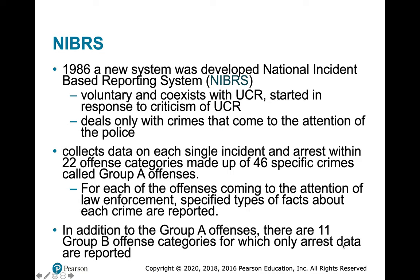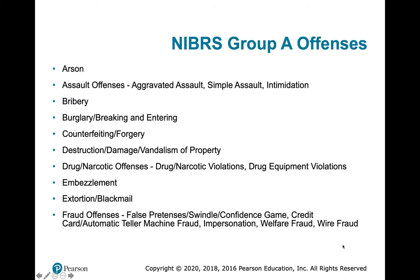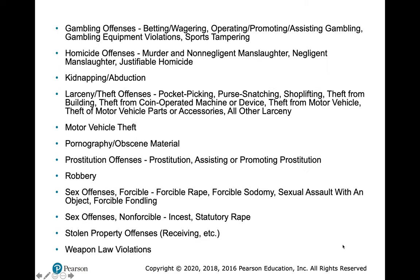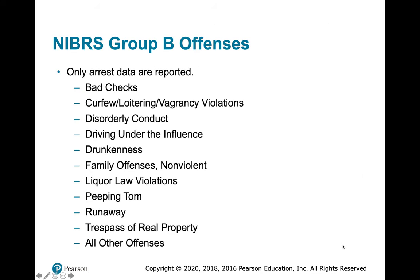There are also 11 Group B offense categories for which only arrest data are reported. Under Group A, you can see categories like fraud with a variety of sub-types, multiple types of assault, and sex offenses divided into forcible offenses — forcible rape, forcible sodomy, sexual assault with an object, and forcible fondling — and non-forcible offenses including incest and statutory rape. Group B offenses include things like peeping toms and disorderly conduct.